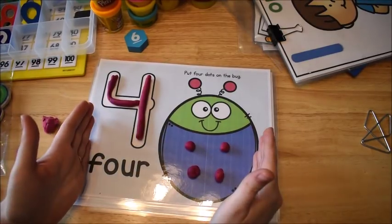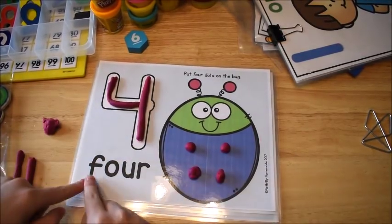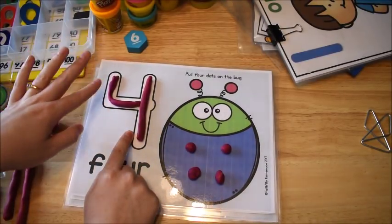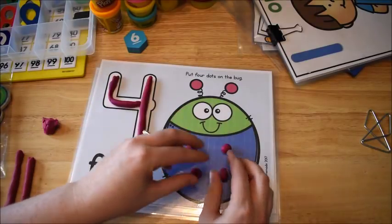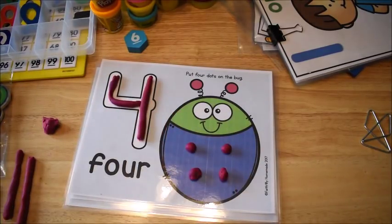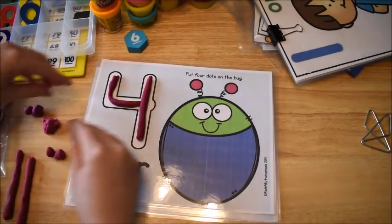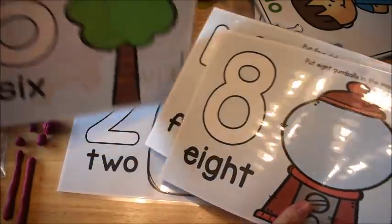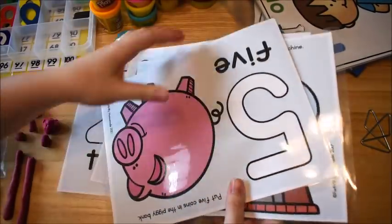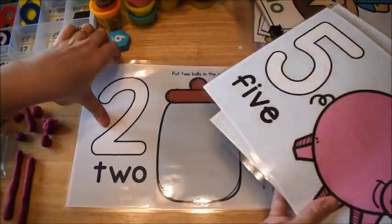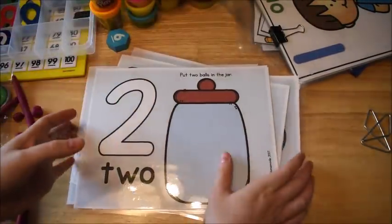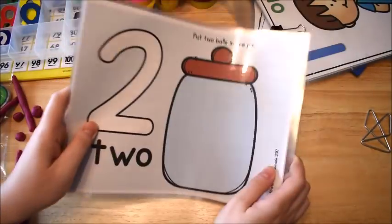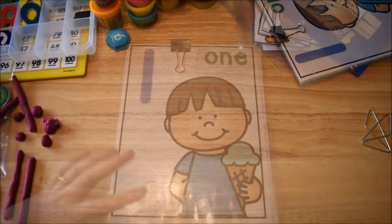They're seeing the number in three different ways. They're seeing the number word, they're seeing the number representation, and then they're seeing the quantity as they count out the number. And of course, these number mats are all kind of different and they have different things that the kids have to do for the number.